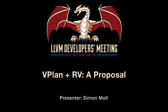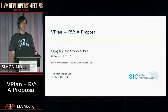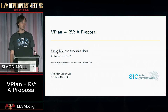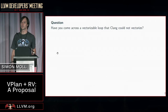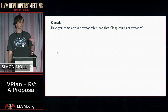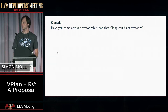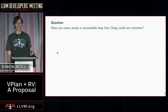Thanks for the introduction. I'm Simon, a PhD student at Zonald University at the Compiler Design Lab of Sebastian Haack. Let me start off with a question: have you come across a loop that Clang could not vectorize, but ICC or GCC could? Has that happened to you? Yes, very good — you're in the right talk now.